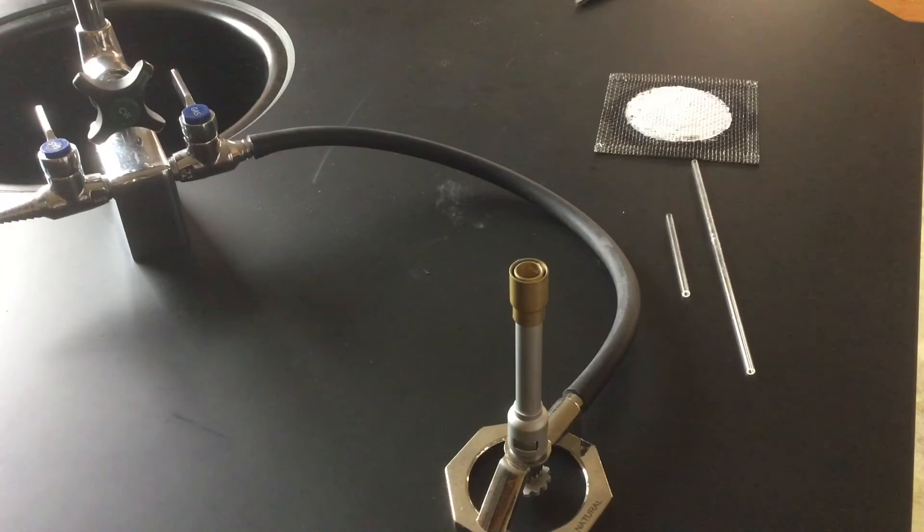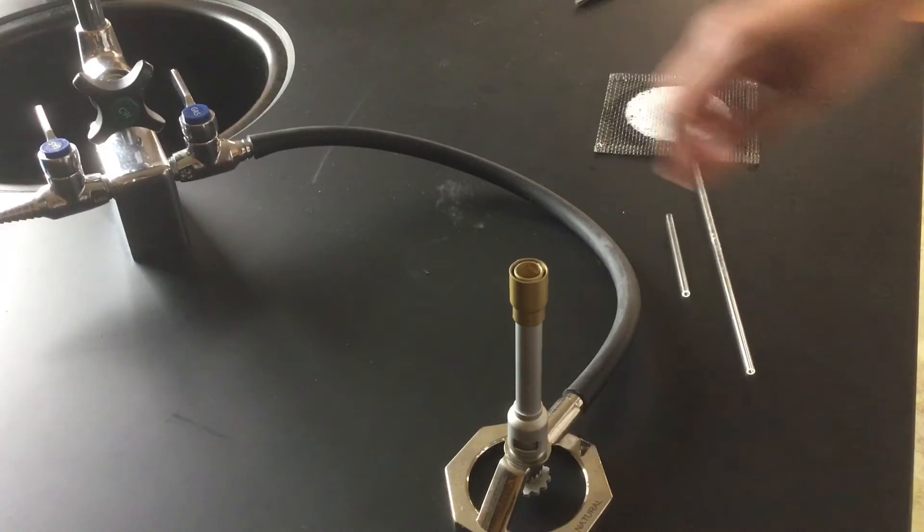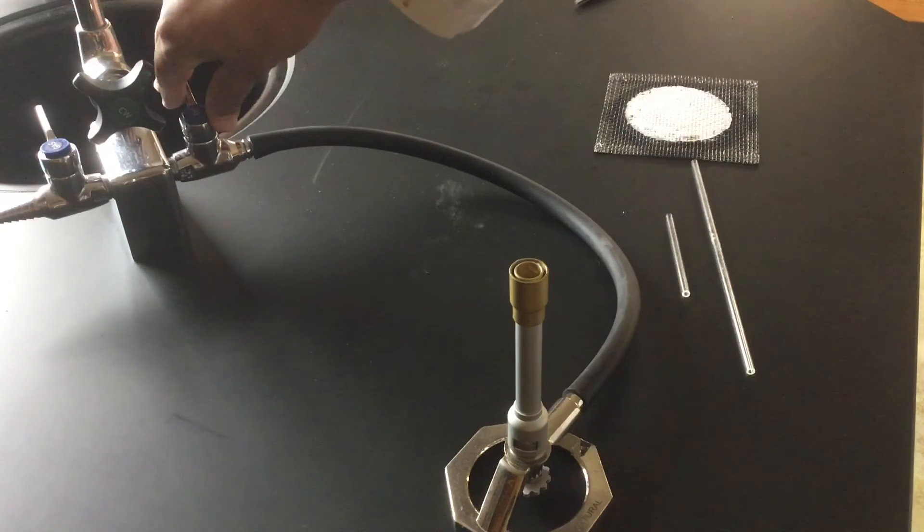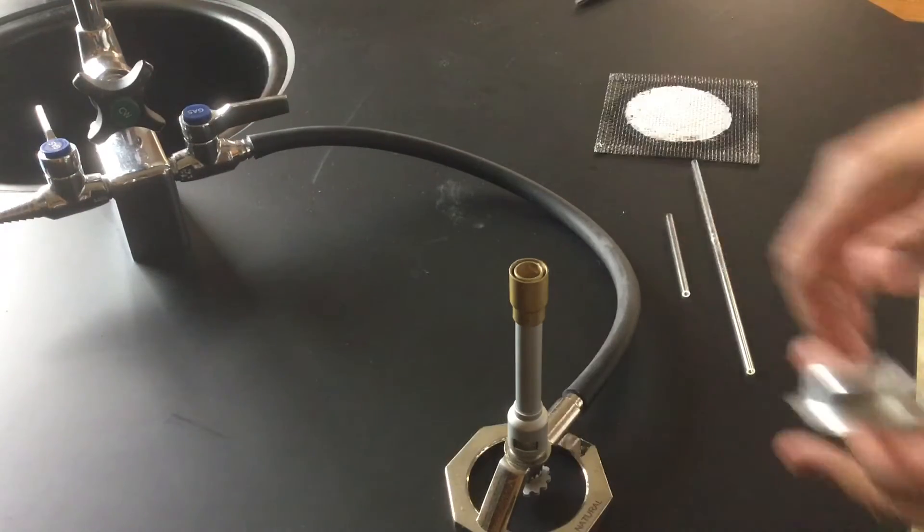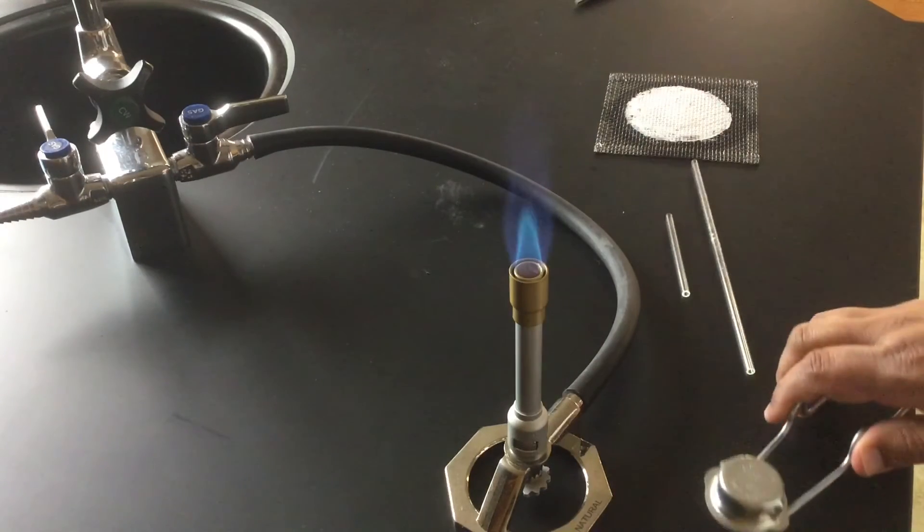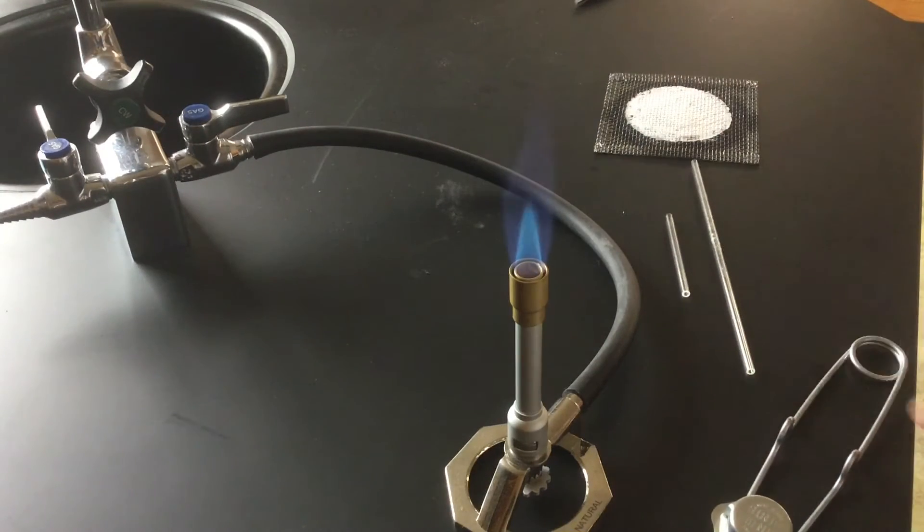So to fire polish the piece of glass I'm going to use my Bunsen burner flame. Just like we've always done I'm going to turn the gas on and light the flame. And in order to do this I need a very hot flame.